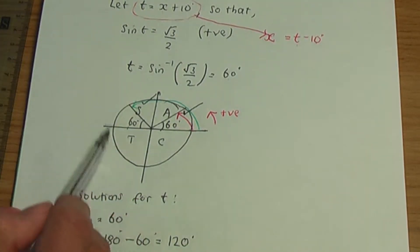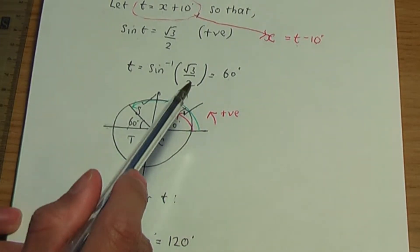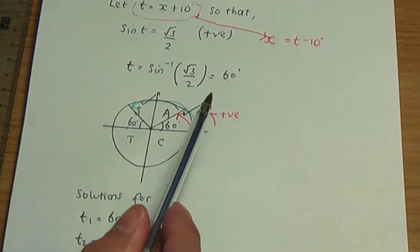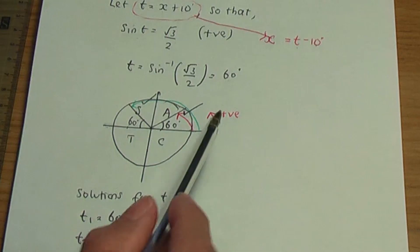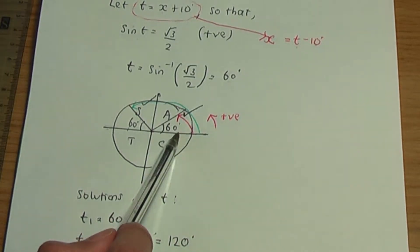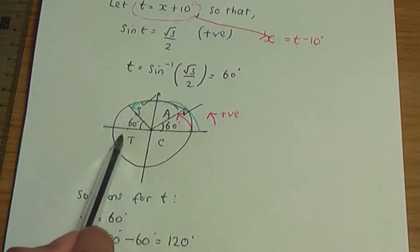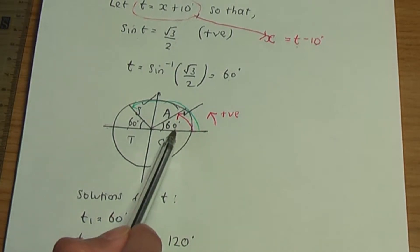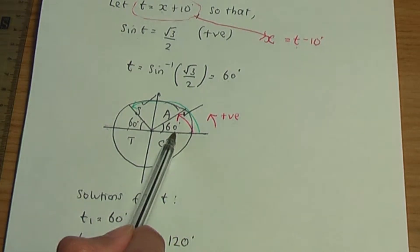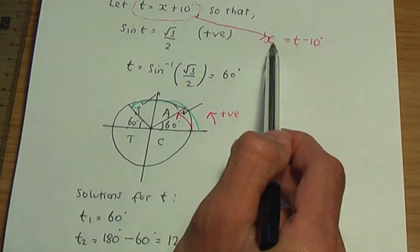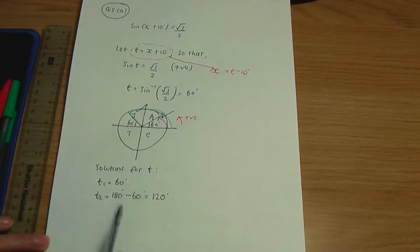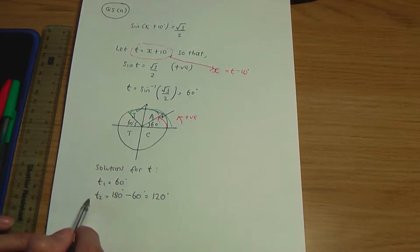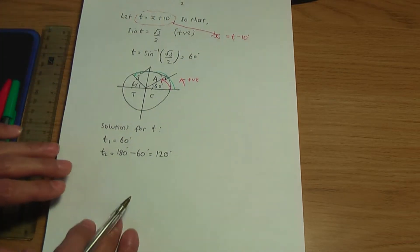If you do a mental calculation, one more solution for t is going to go beyond the solutions for x when it comes to the range. Bearing in mind that x should lie between 180° and 0°, if you were to calculate one more solution for t, that would be 360° + 60° = 420°, and the solution for x would be 420° − 10° = 410°, which is way beyond the range. So I'm going to stop with these two solutions.